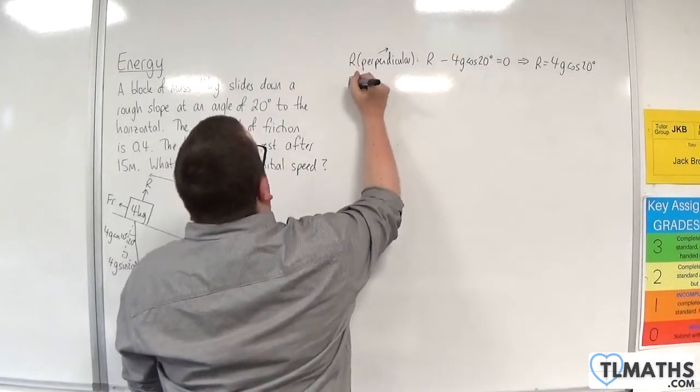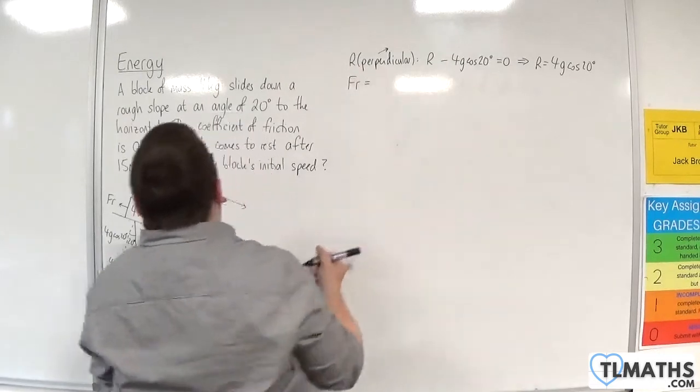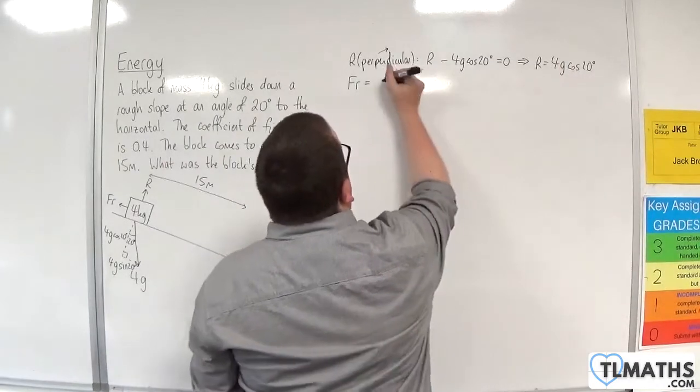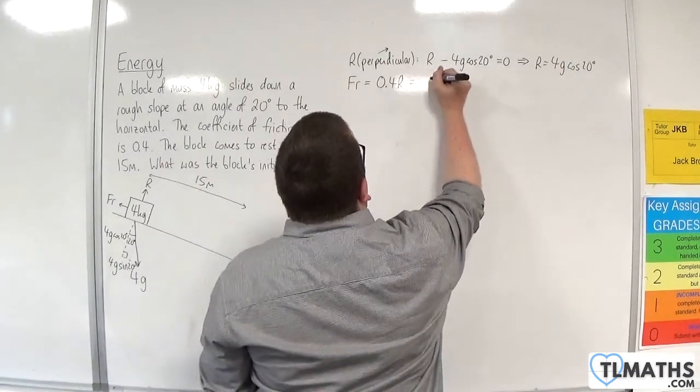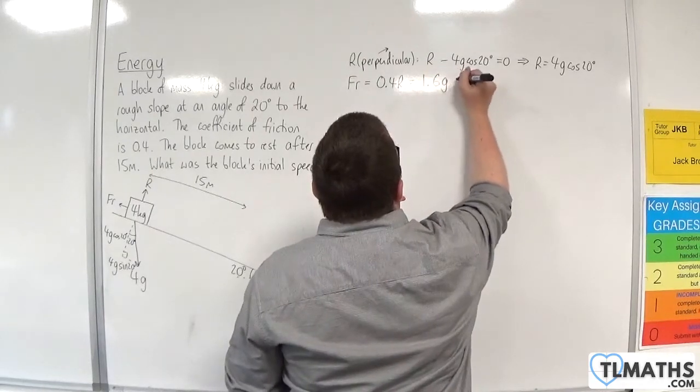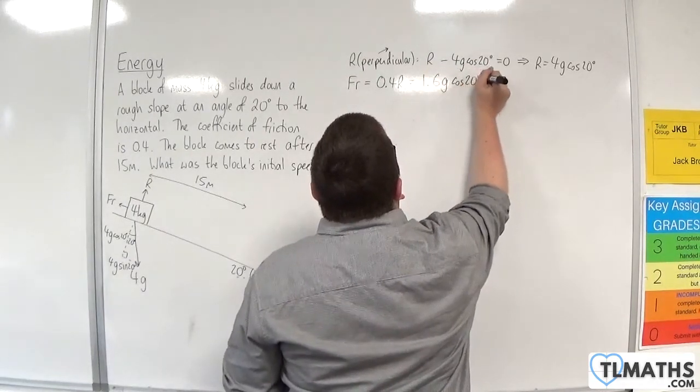Now, I know because it's moving, the friction is going to be equal to mu times R. So 0.4 times that. So 0.4 times that would be 1.6g cos 20.